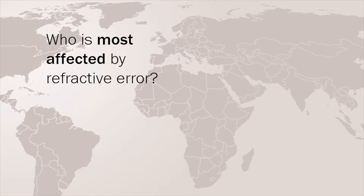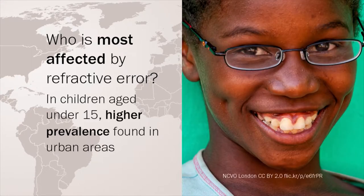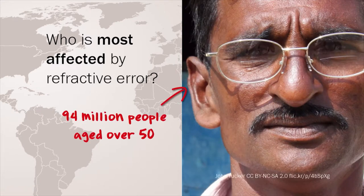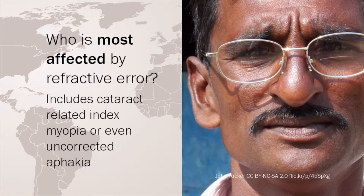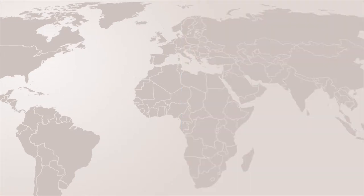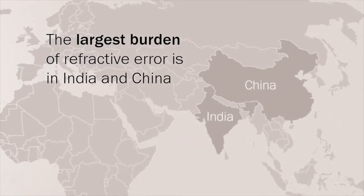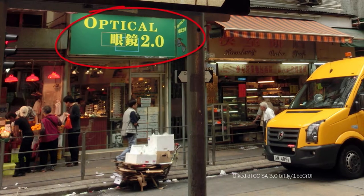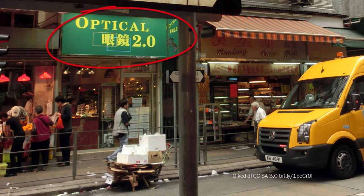Who is most affected by refractive error? In children aged under 15, the prevalence of refractive error has been found to be higher in urban areas than in rural settings, possibly due to a direct cause and effect relationship between access to education and myopia. Refractive error amongst 94 million people aged over 50 includes cataract-related index myopia or even uncorrected aphakia. The largest burden is in India and China, and more research is needed. Some estimates for service coverage show that urban settings have better services, particularly for children.